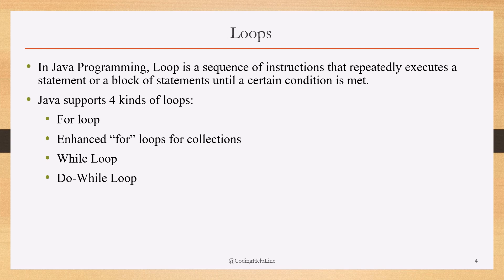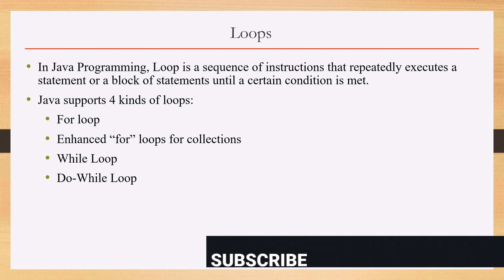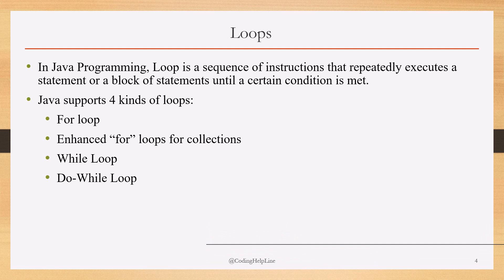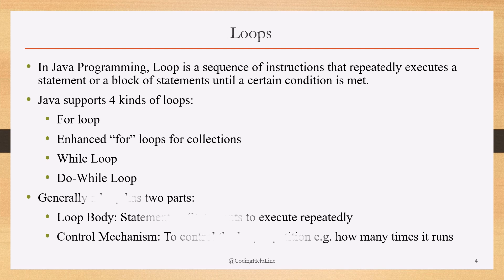The for loop is a standard conventional loop. The enhanced for loop is for collections like arrays or lists. The while loop is also a conventional loop used when you do not know how many times you have to run the statement. The do-while loop is a variation of the while loop.